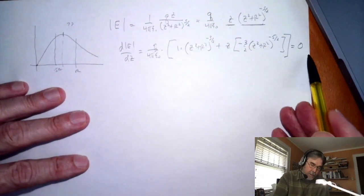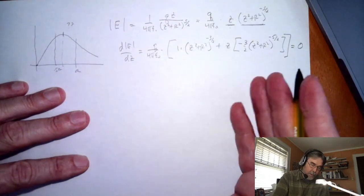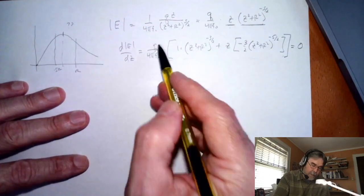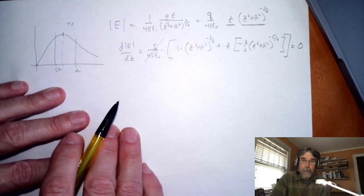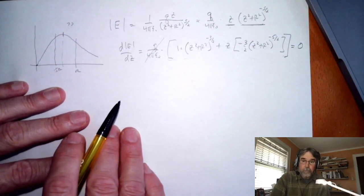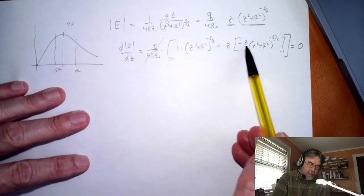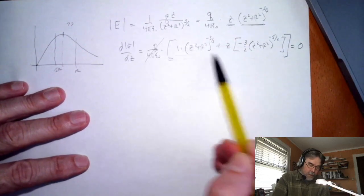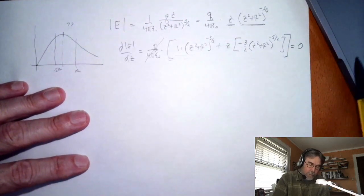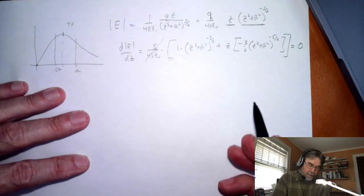You'll notice because it's set equal to 0 the only way this whole thing can be 0 is if the stuff in brackets is 0, that constant doesn't actually matter. It's also true that this term has a negative sign so that means this term and this term have to be equal in magnitude in order for this thing to be satisfied.